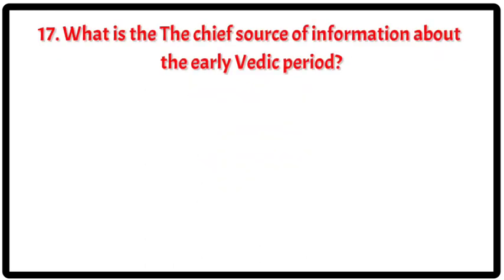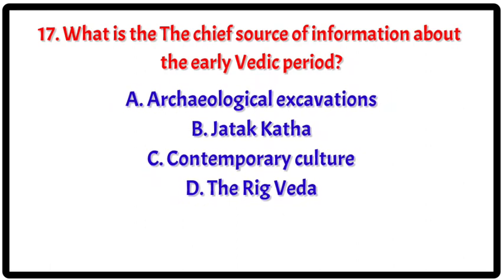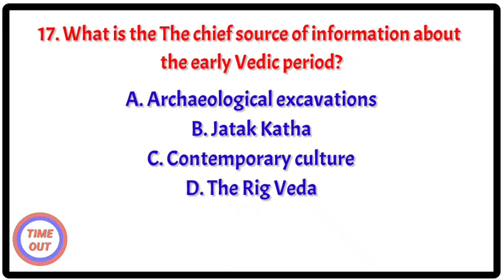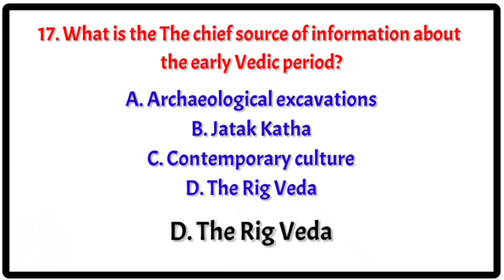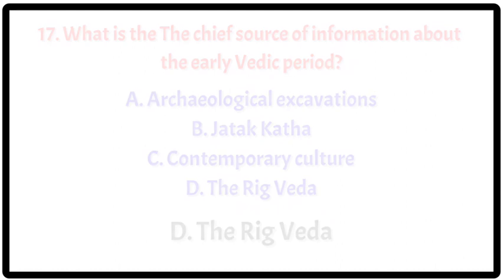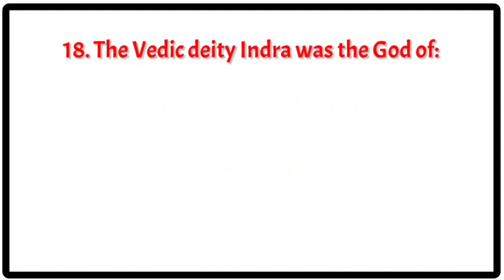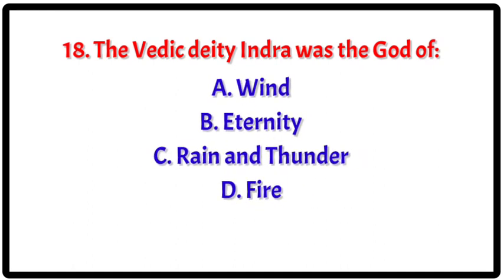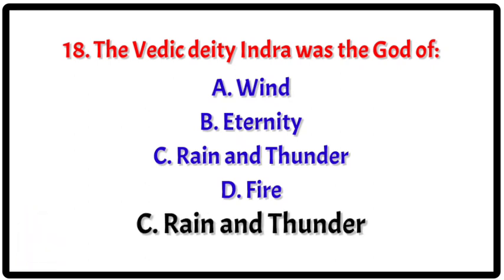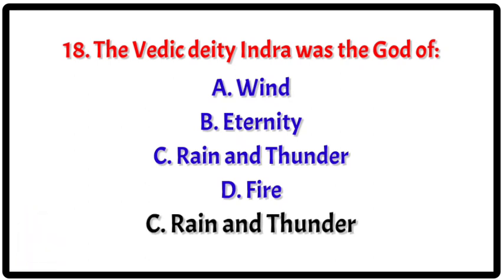Question 17: What is the chief source of information about the early Vedic period? Your options. Question 18: The Vedic deity Indra was the god of? Your options. The correct answer is C — Rain and Thunder.